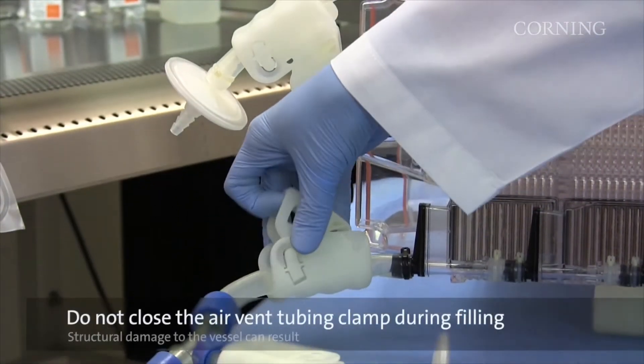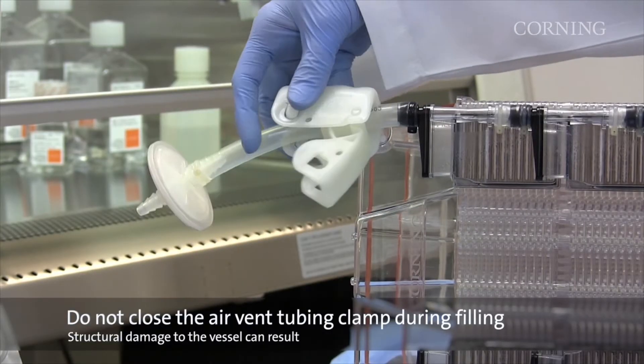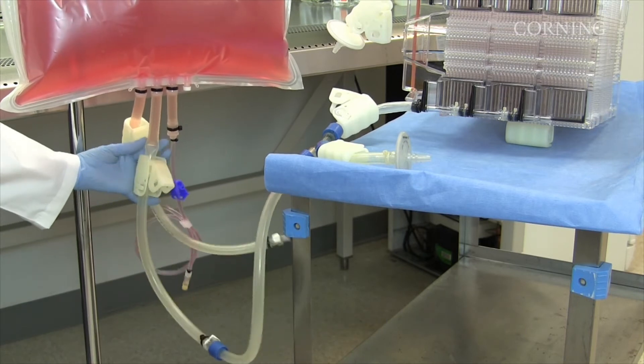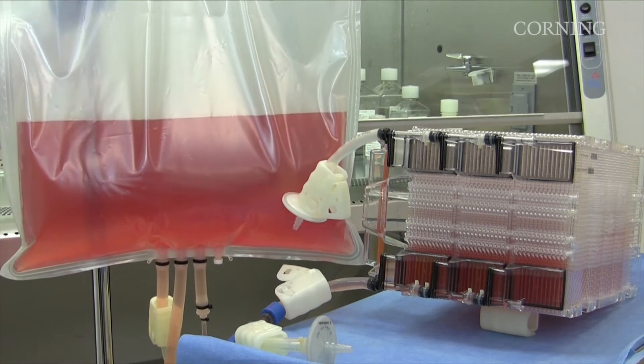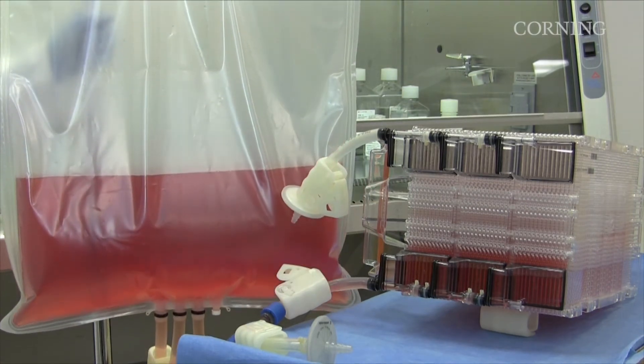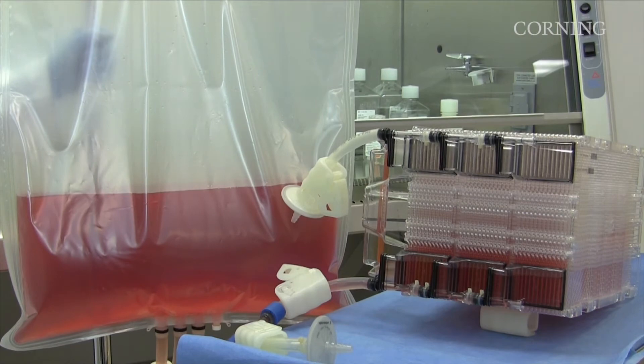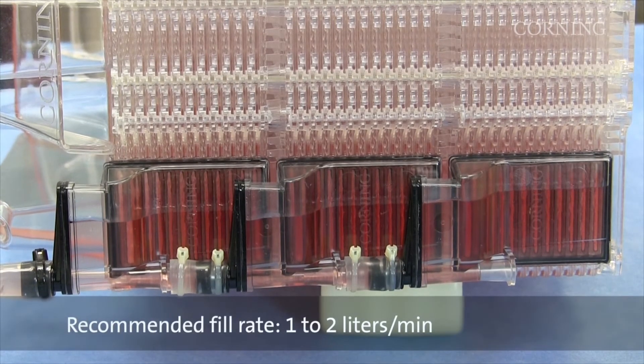To begin filling, open the liquid handling tubing clamp and air vent tubing clamp. Open the source vessel clamp to allow media to fill the HyperStack vessel. To control the fill rate, slowly raise or lower the height of the source vessel to increase or decrease flow into the HyperStack vessel. The recommended rate for pump or gravity filling is 1-2 liters per minute.